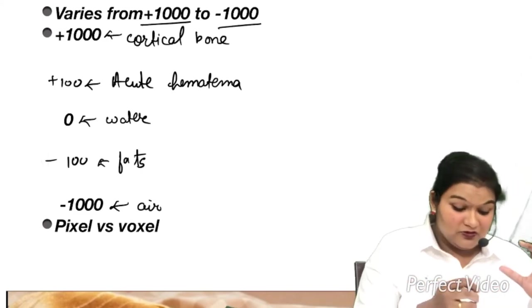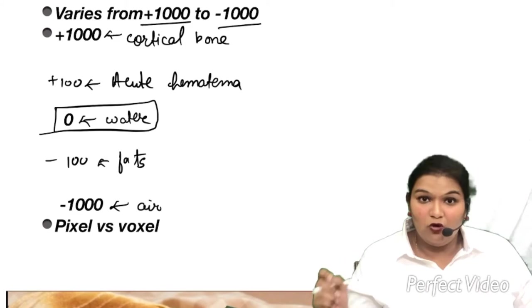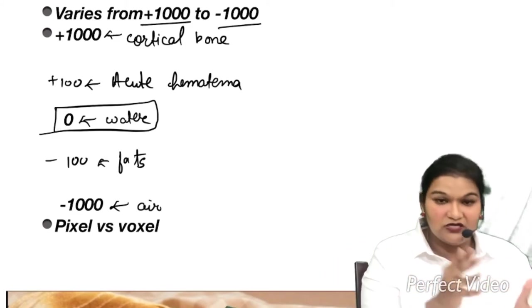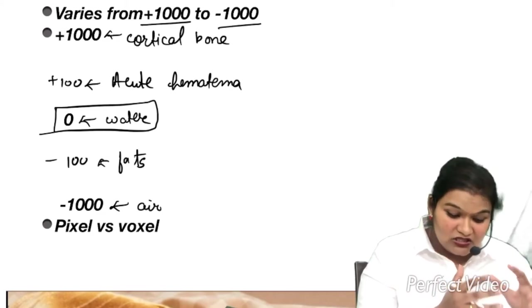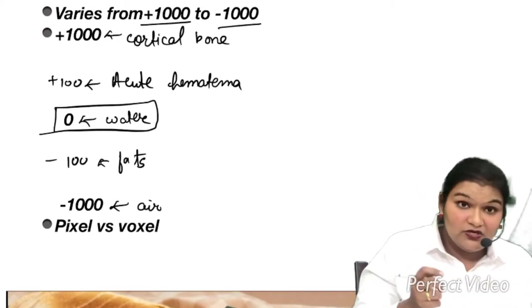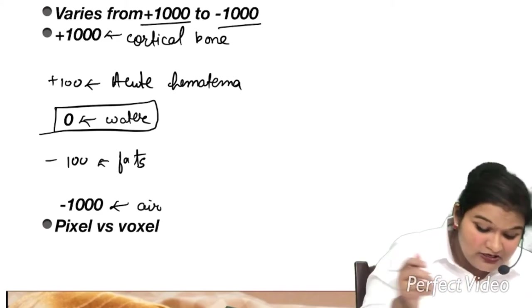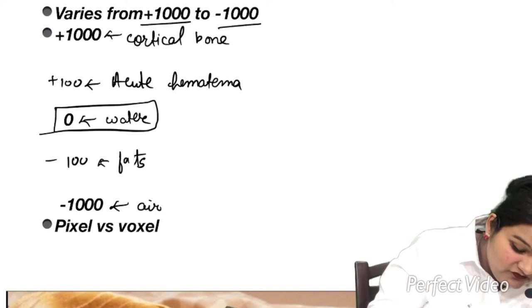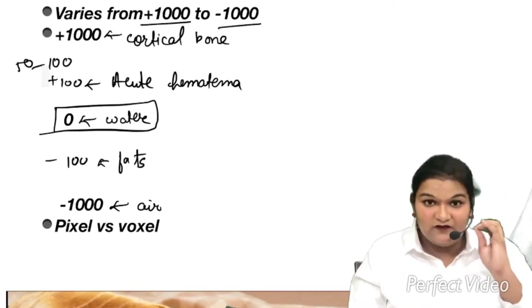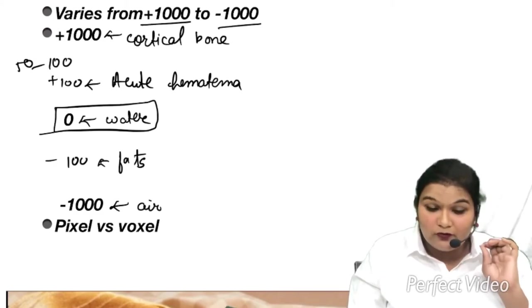See, this 0 HU of water is a standard, it does not vary. The Hounsfield unit of water is 0. But this 1000, 100, minus 100, minus 1000 varies. This acute hematoma, the HU unit for acute hematoma can vary from plus 50 to 100. So it is not specific. What is specific is the water, what is constant is the HU of water.